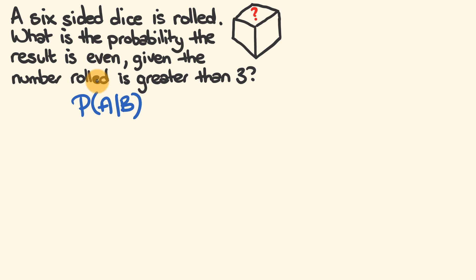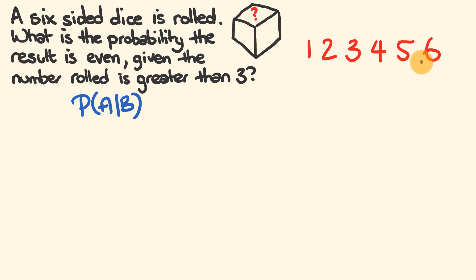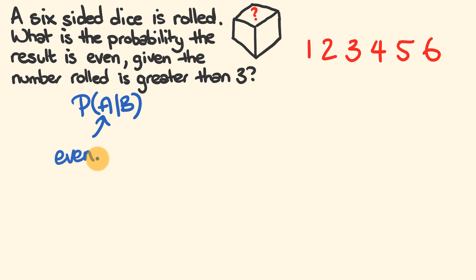So we're going to use logic for this particular question. We've got a six-sided dice which has been rolled. What potential outcomes could we have? We could have six of them: one, two, three, four, five, or six. What we're trying to find out is the probability of event A occurring given that event B has occurred. Event A is what we're trying to find out — the probability that the result is even. Event B is the given, the thing we already know: the number rolled is greater than three.